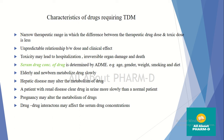Serum drug concentrations are determined by absorption and metabolism. Factors such as age, gender, weight, smoking, and drug interactions can affect plasma concentrations. For example, elderly and newborn patients metabolize drugs more slowly. Hepatic disease may alter metabolism, renal disease may slow drug clearance, pregnancy may alter drug metabolism, and drug-drug interactions may affect serum drug concentration.